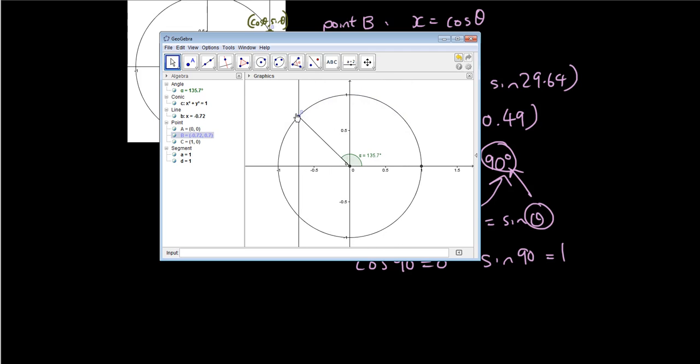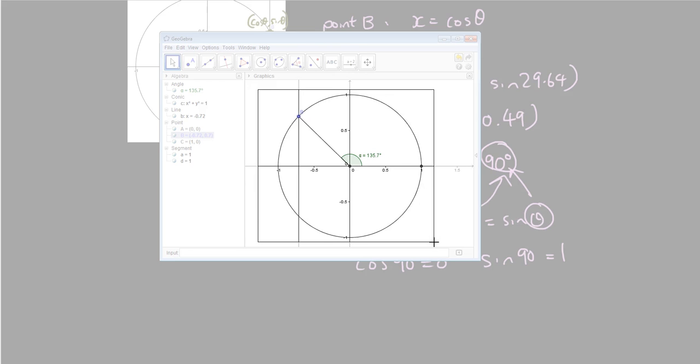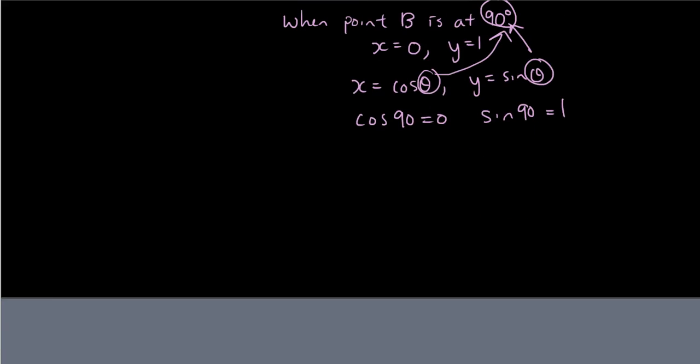And now we still have an x and y-coordinate for this point. And the definition for sine and cosine still works. So we've dragged it to the other side. And what is the y-coordinate of this point? So let's make a screenshot of this diagram and put it here.